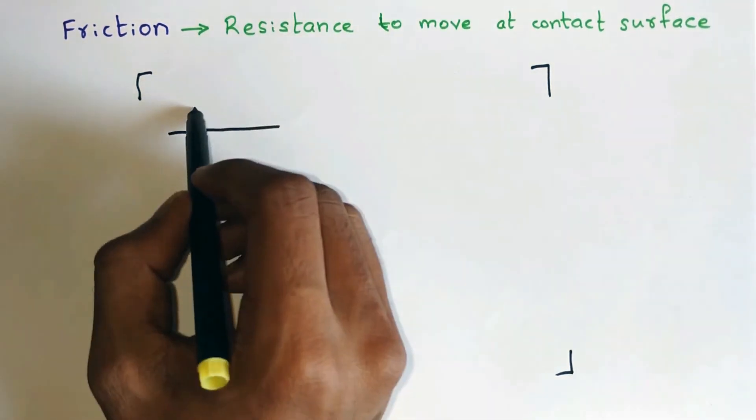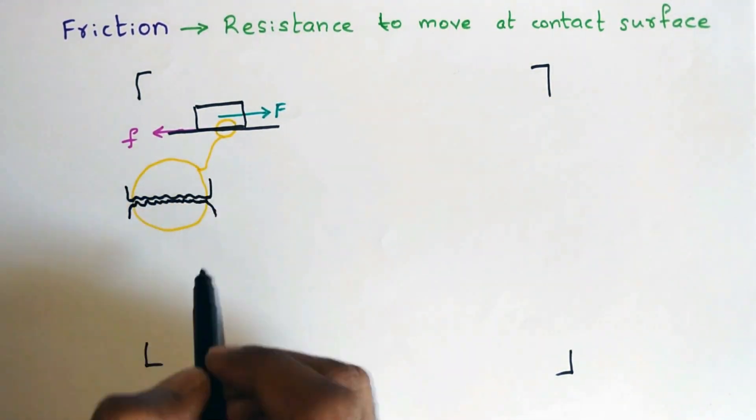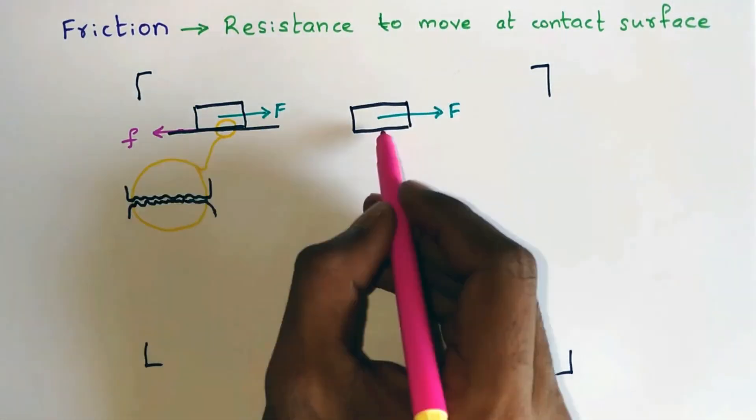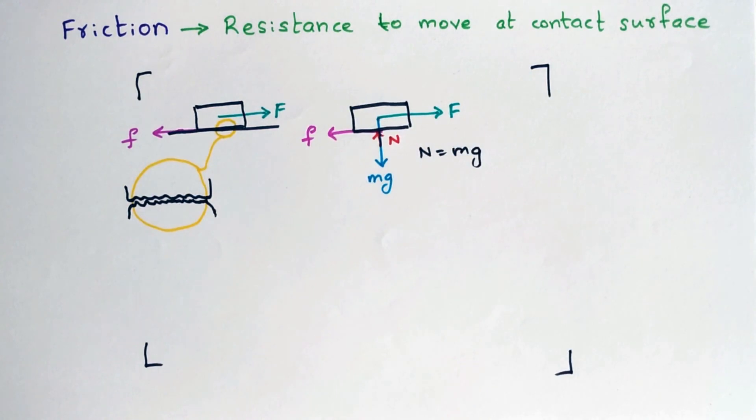When a body is placed on a rough surface and a force F is acting on the body then opposing force will be created to its motion because of the irregularities of the surface. If you draw a free body diagram of this body then we can say that n is equals to mg and it is found that the frictional force acting on the body is proportional to the normal reaction.